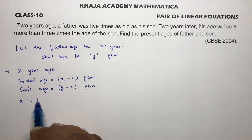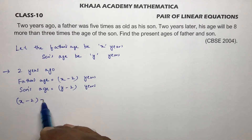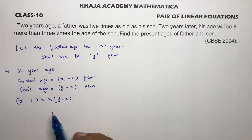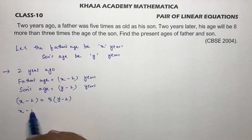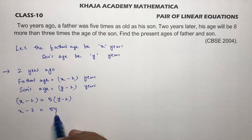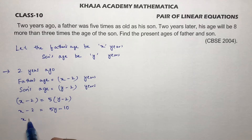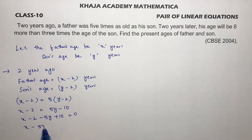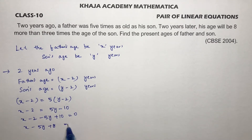According to the given condition, father's age x minus two is five times son's age y minus two. Simplifying: x minus two equals five y minus ten, so x minus five y plus eight equals zero. This is equation one.